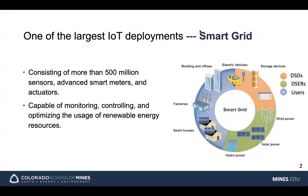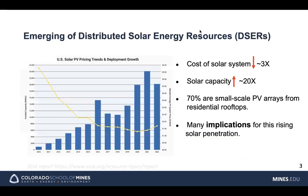There are so many IoT deployments in the real world. One of the largest IoT deployments is the smart grid. From this figure, we can see there are new things like EV cars, wind power, solar power, and hydropower. They are changing the smart grids, and smart grids are having to manage them — especially with the emerging trend of distributed solar energy resources, DER.